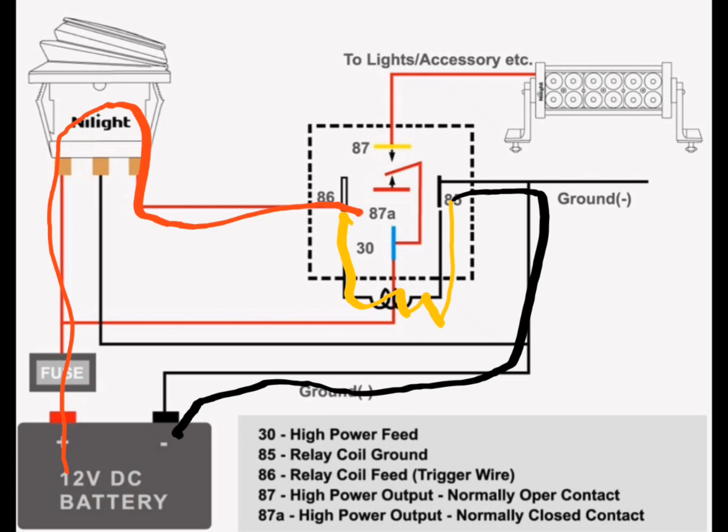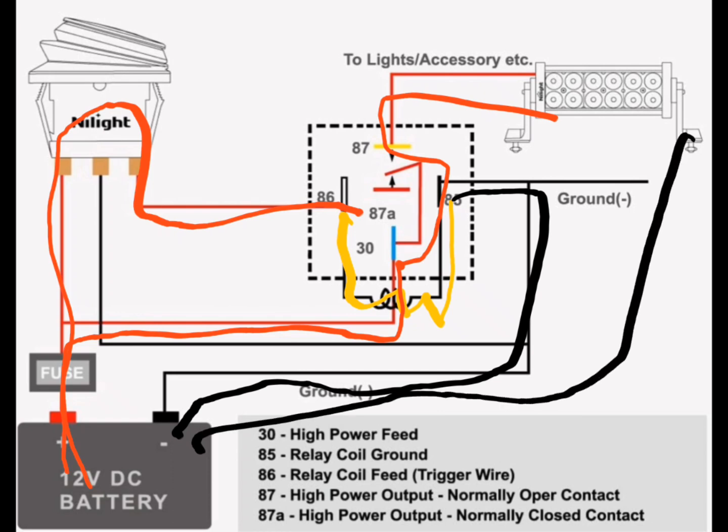Electricity will then flow through the fuse, come along this line to pin 30, and it will bypass 87a and get to 87 and go out to the light. So then the light's gonna turn on and it needs to send energy right straight back to the battery.